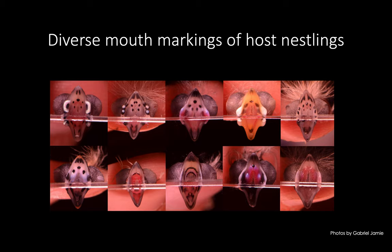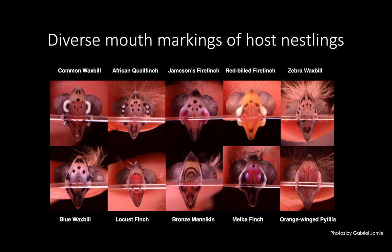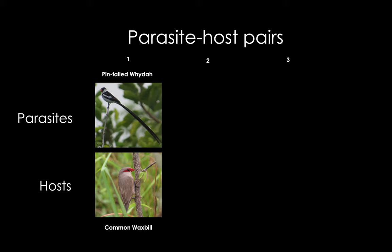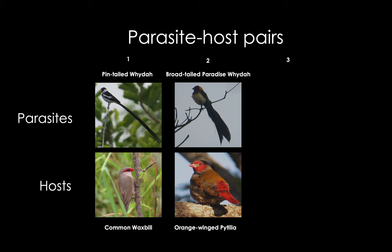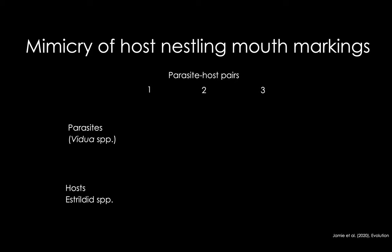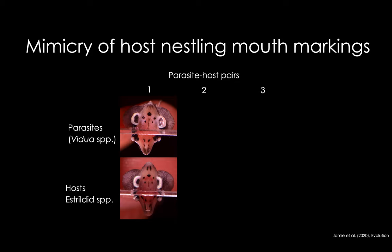These are the photos that result. Here you can see the mouth markings of ten species of estrildid finch occurring at our field site in southern Zambia — many of which are hosts to indigo birds and whydahs — and you can see how diverse and species-specific the mouth markings are. To investigate mimicry, we focused on three pairs of parasites and hosts: the pin-tailed whydah, which lays its egg in the nest of the common waxbill; the broad-tailed paradise whydah, which lays its egg in the nest of the orange-winged pytilia; and the purple indigo bird, which lays its egg in the nest of Jameson's firefinch. Here you can see the striking mimicry in both colour and pattern of the respective hosts of each of these three parasitic species.